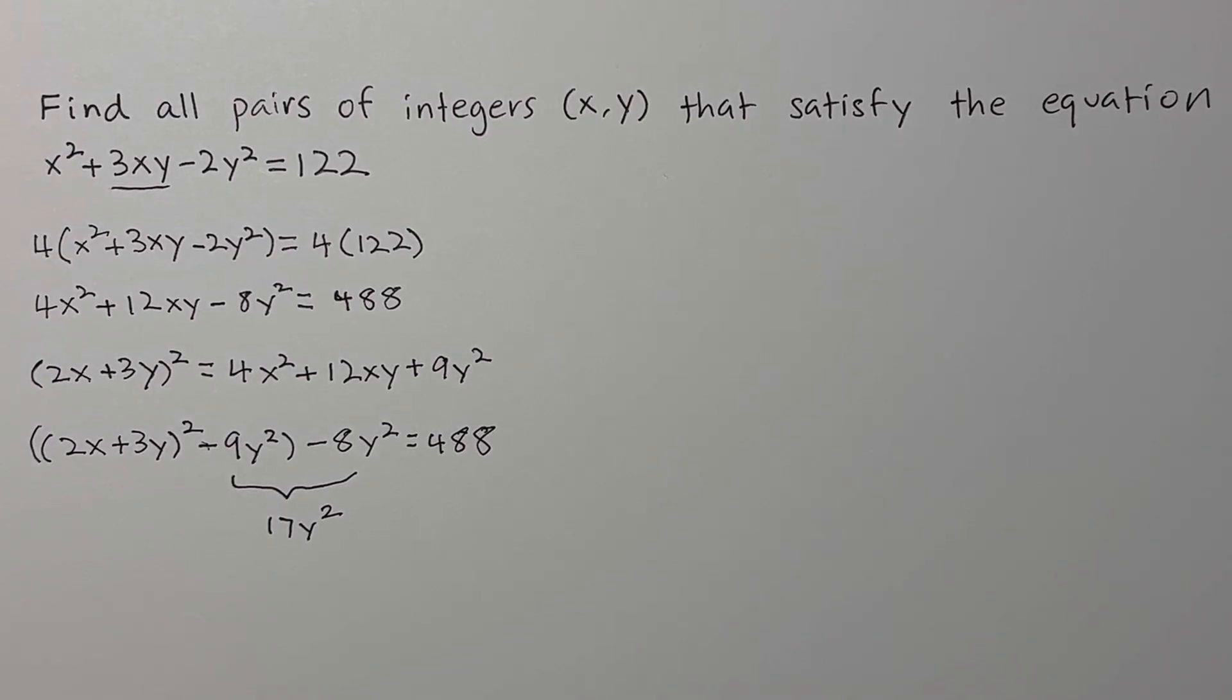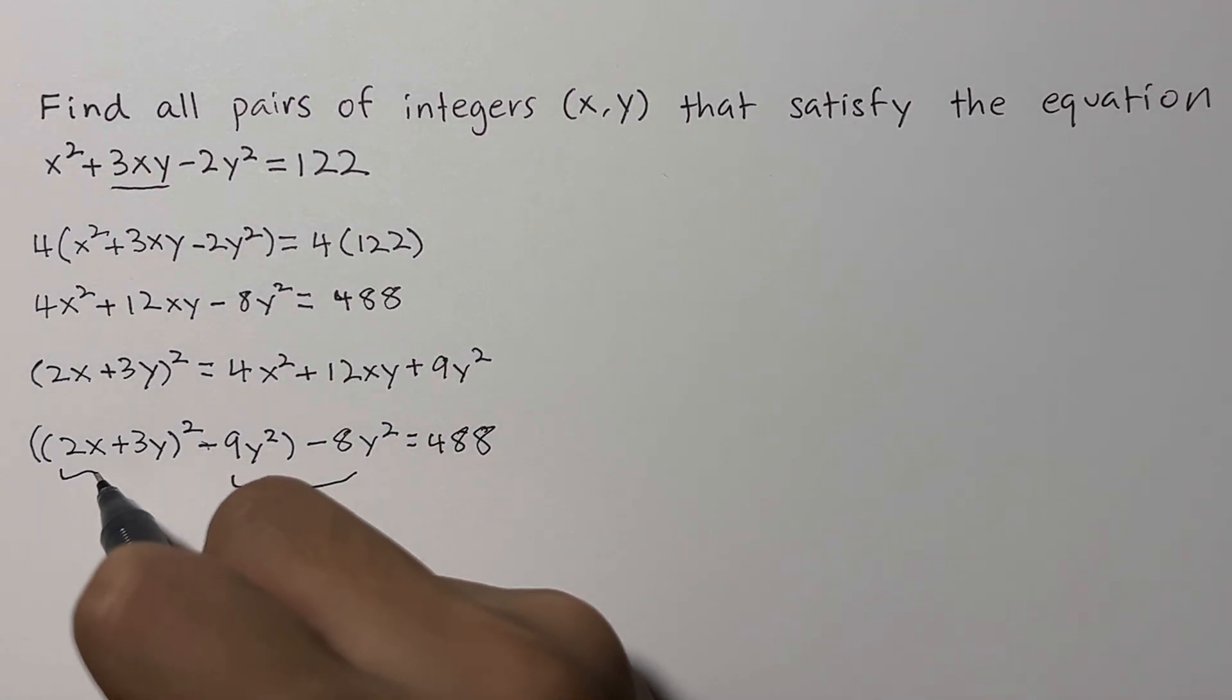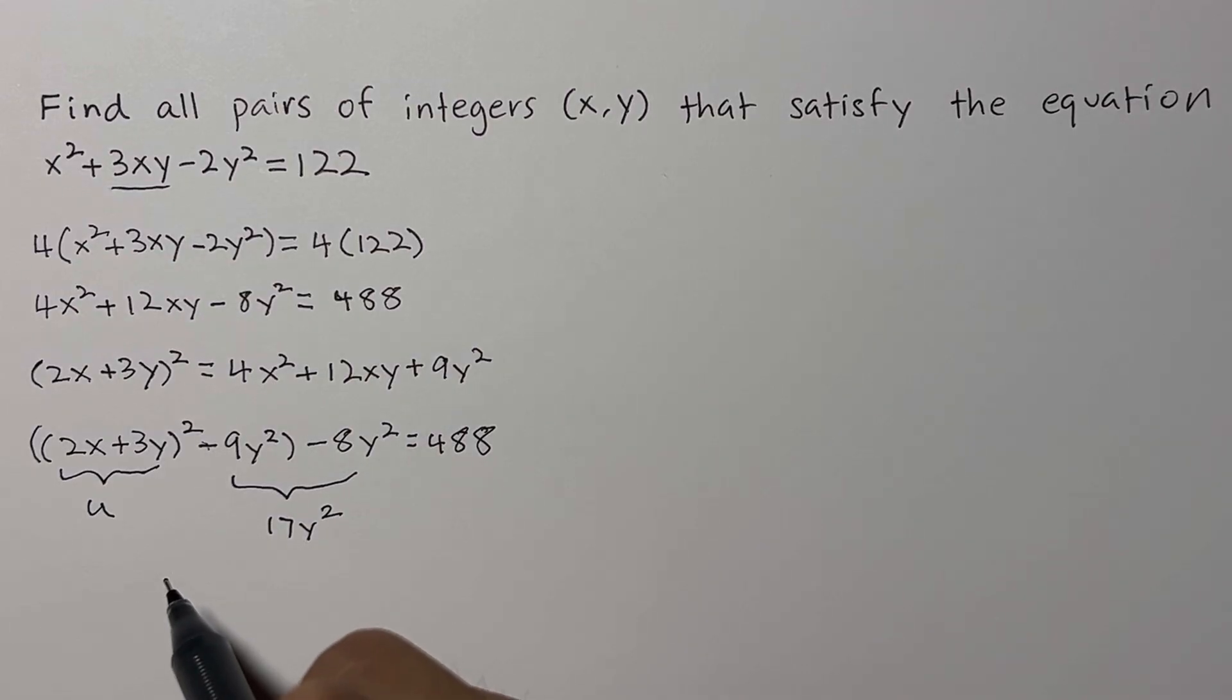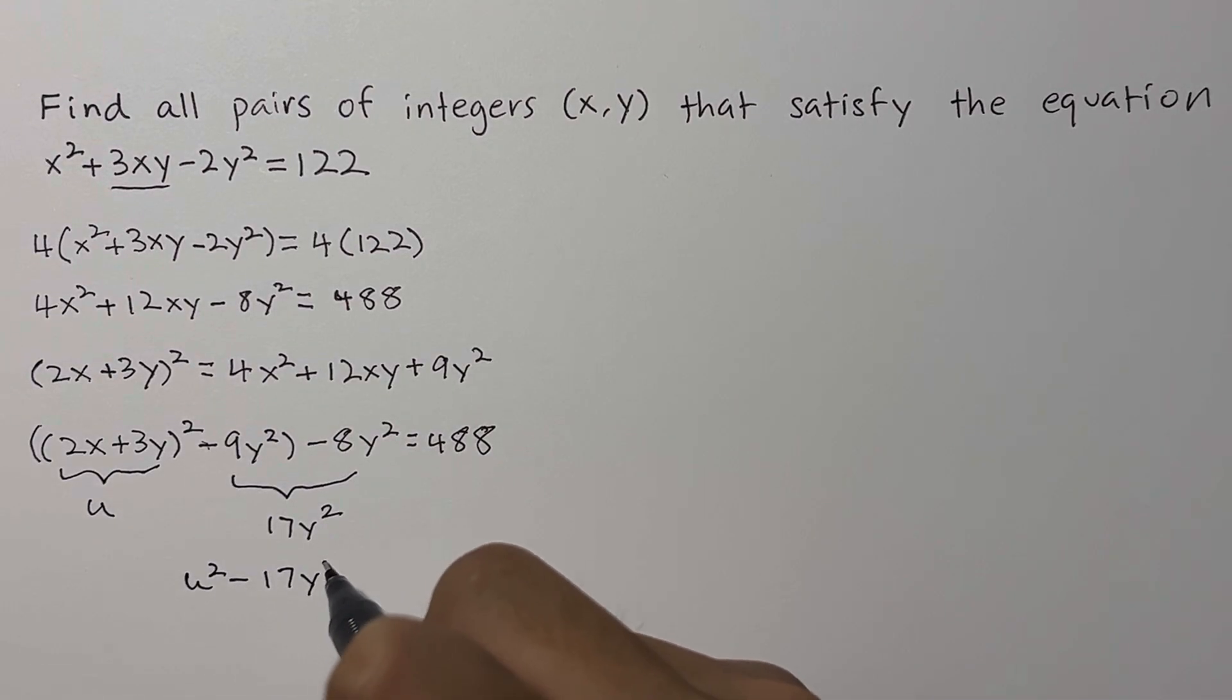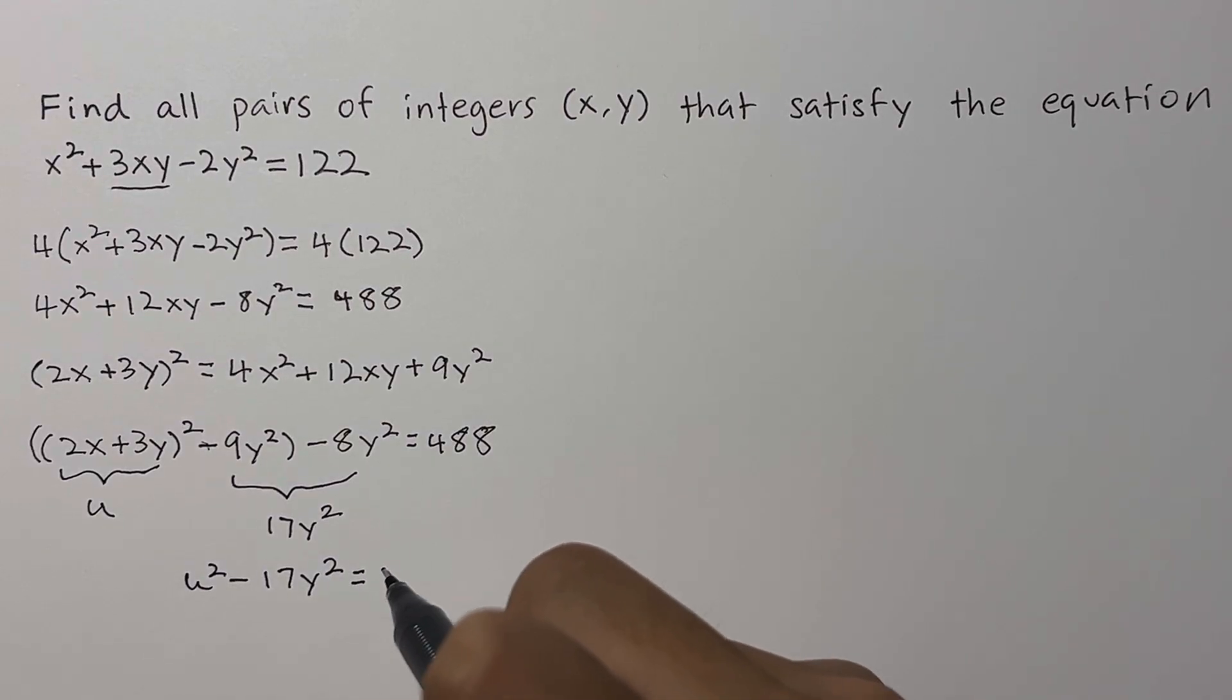This is already an improvement. We've transformed the equation into a much more structured and famous form. Now, let's make a simple substitution to see this clearly. We can let the portion inside the parentheses, 2x + 3y, equal to u. Why do we do this? Well, since x and y are integers, u must also be an integer.